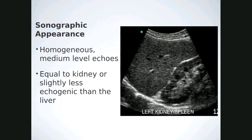The spleen is a little bit darker than the liver and more equal to the cortex of the kidney. They'll sometimes ask you on the registry to put the organs in order from highest echogenicity to the lowest echogenicity.